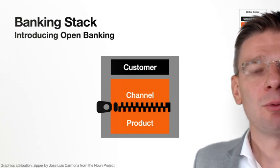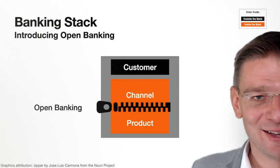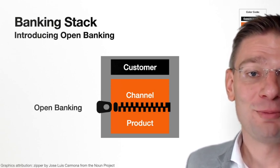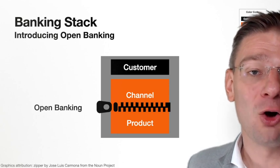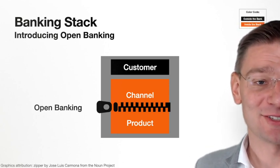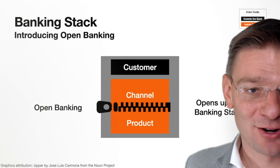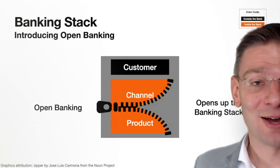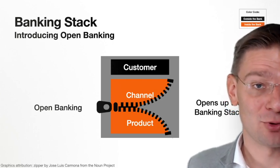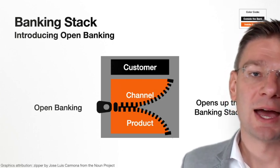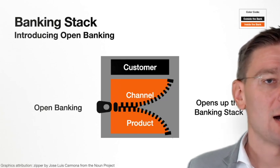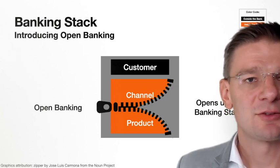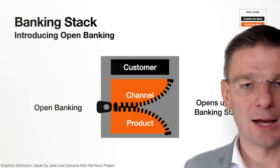When we introduce open banking, we have those internal APIs and open banking basically opens up the banking stack. What happens is that you take the zipper and you open it up a little bit — you open up the link between the channel and the product so that those two elements are now separate elements in a stack and they can be addressed separately from the outside.